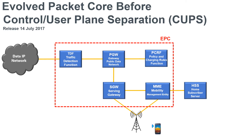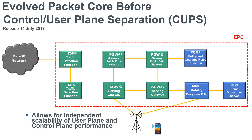One key step is to separate out the control plane and the user plane. Today in the Evolved Packet Core, the control plane and user plane both run through the serving gateway, the public data network gateway, and the MME. In the future, we'll separate out this functionality — for example, the public data network gateway and serving gateway will be split into control plane and user plane functions. This allows us to scale the network independently; for instance, IoT devices may be very chatty but not transfer much data, so the control plane may need to scale faster than the data plane.